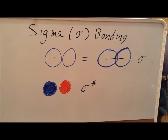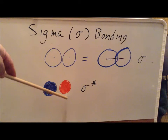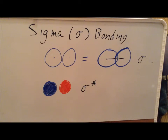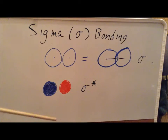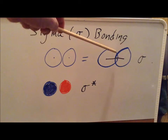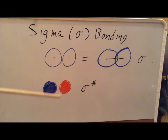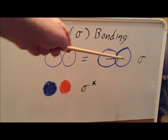Another possibility with two 1s orbitals is that they have different phases. To make it more colorful, we represent the two phases in completely different colors — one in blue and one in red — interpreted as positive and negative phase. When we have this arrangement, we still have a sigma bond, but it is a sigma antibonding orbital. In the overlap region of a sigma antibonding orbital, we have a decrease in electron density.